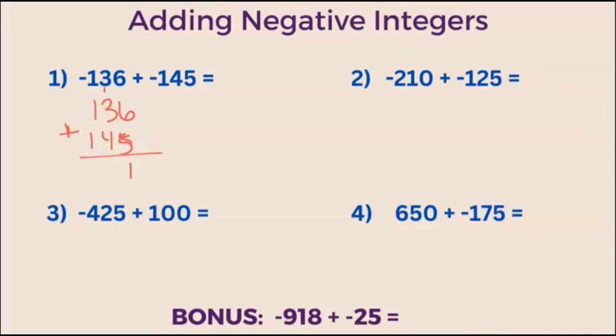So 6 plus 5 is 11. 3 plus 4 is 7, plus 1 is 8. And 1 plus 1 is 2. So we have 281. Both of these signs are negative. So we add a negative sign here and your answer is negative 281.